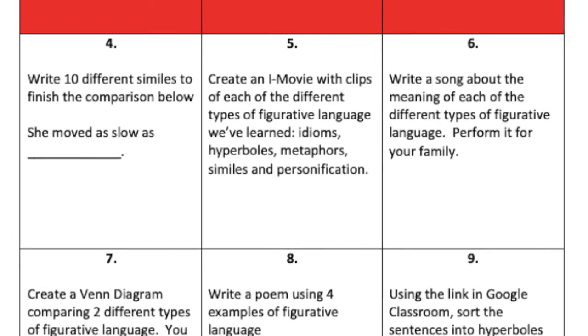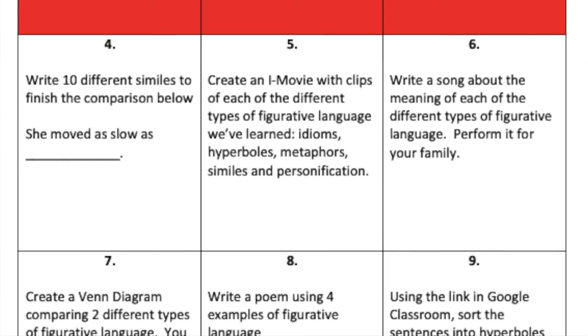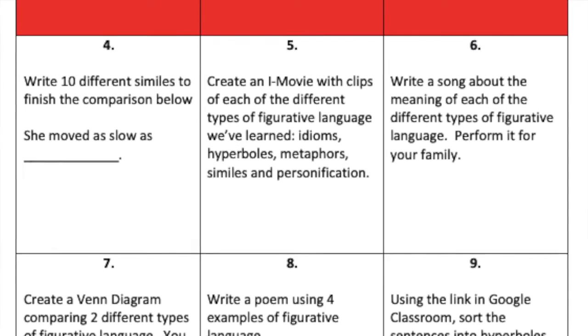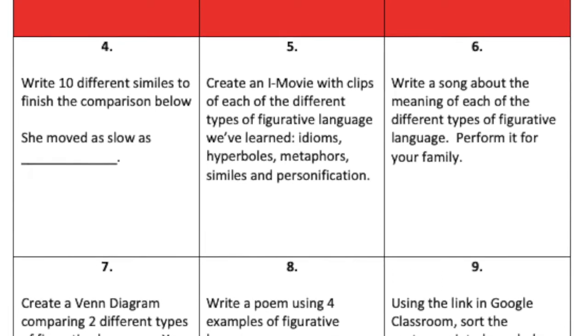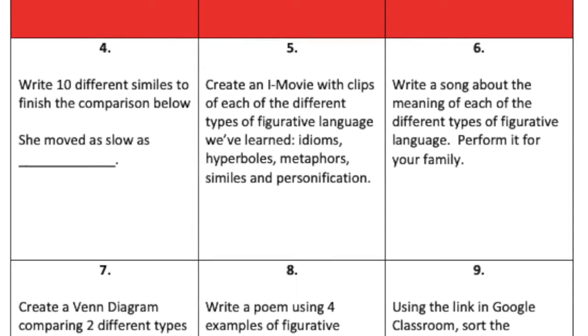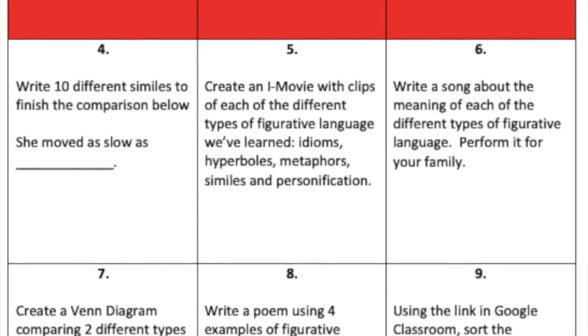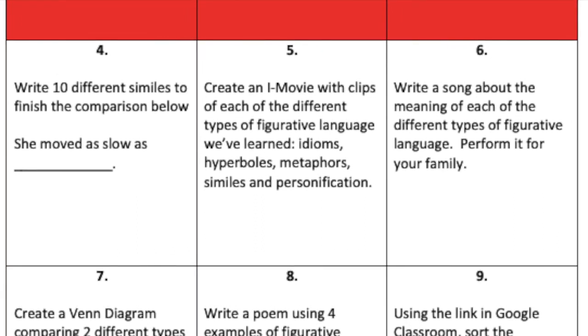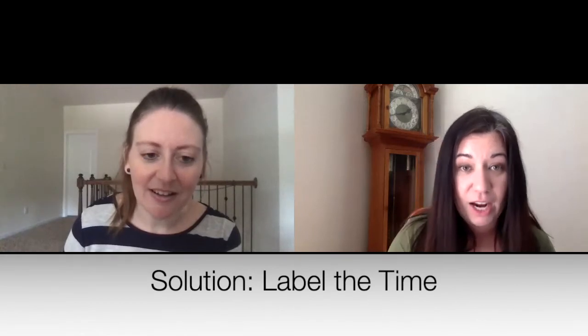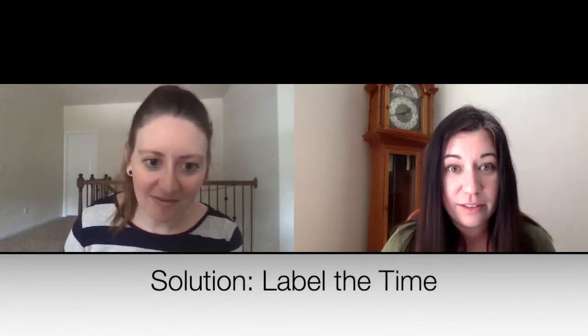The fourth pitfall is time. As teachers creating choice boards, we often don't think about the time it takes to do different tasks on the board. Looking at this figurative language example, writing 10 different similes in number four could be pretty short — you're just writing 10 similes. But then creating an iMovie in number five is going to take a lot longer. There are very different time expectations across these tasks. A way to avoid this pitfall is to label, when you're designing it, how long you think each task will take.